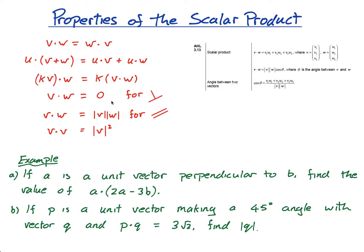A lot of this is actually quite intuitive. If you think about it, the scalar product is just this times this plus this times this plus this times this. Then obviously v dot w equals w dot v. And then u dot (v plus w) would equal u dot v plus u dot w. If you just want to try and work out a few of these, you'll see that it's very clear.